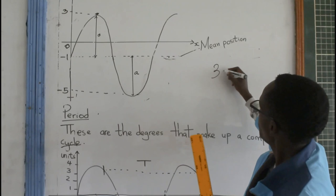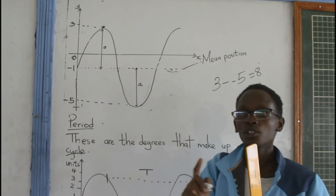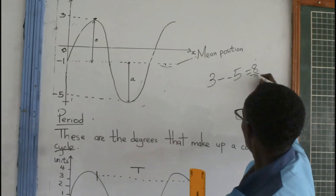But then, the mean position cuts the waves into 2 equal parts. So, you divide it by 2. So, you find that the mean position is supposed to be 4 units from each side.